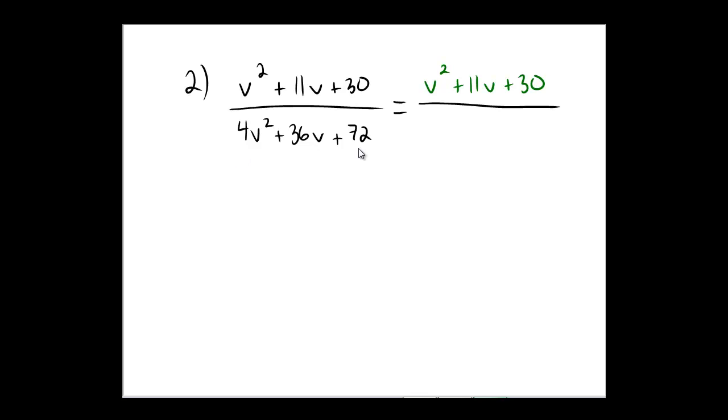4 is a common factor that can go into those. And the remaining pieces would be a v squared plus a 9v. 9 times 4 is 36.